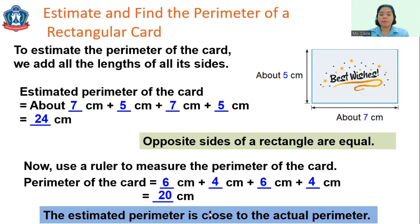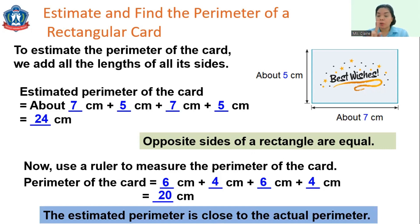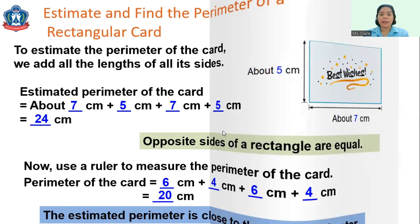The estimated perimeter of 24 centimeters is close to the actual perimeter of 20 centimeters. So what is perimeter? By looking at this example, we can say that the perimeter is the total distance around a shape — it could be a rectangle, a square, or any other 2D shape.